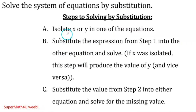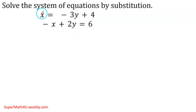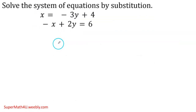First step is to isolate the x or the y in one of the equations — isolate it, leave it by itself. Then I'm going to substitute that into the other equation and solve for the variable. The idea is to leave the x or the y by itself in one of the two equations. We notice that in the first equation, the x is already by itself, so that's my first step done. My second step is to substitute — that's where the name comes from.